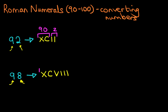And we can break it down here. The XC is 90. And the VIII is 8. That is 98.